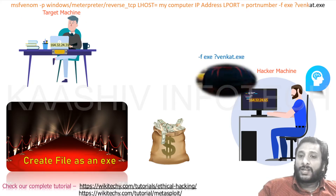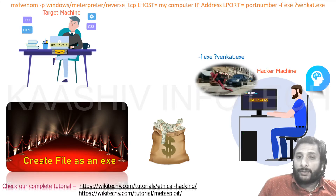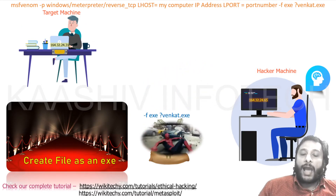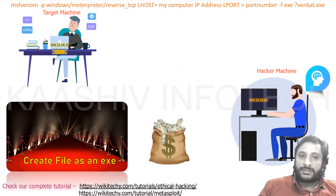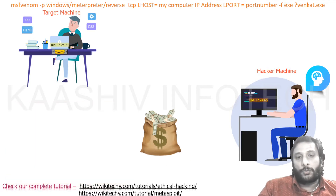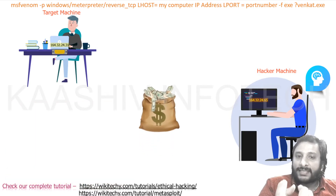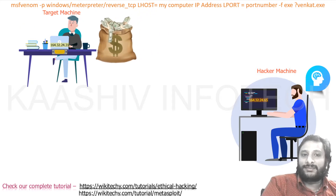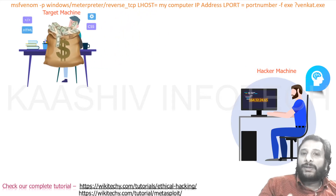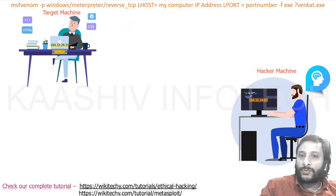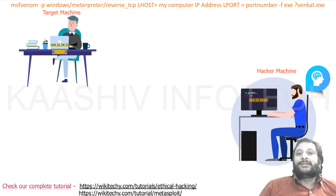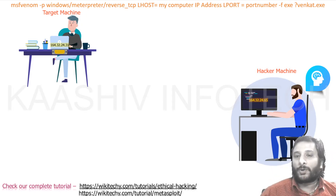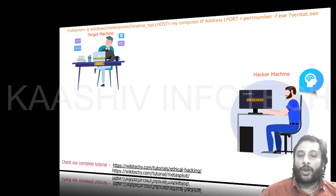Apart from that, how should the payload be created? The payload should be created as an executable file. Now I have an executable file with MSFvenom, the library, and the listening port — everything combined as a single payload and sent to the destination machine. The destination machine will receive it, and once they click on it, it's activated and you are able to monitor it. That's how your Metasploit works.